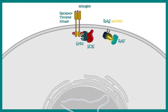In cancer, the RAS MAP kinase pathway is perturbed. One of the common things in cancer is mutation in the RAS oncogene. In the mutated RAS, the GTPase activating protein GAP cannot hydrolyze the GTP. As a result, RAS is constitutively active regardless of the presence of any mitogen, because it's a mutation in RAS itself.